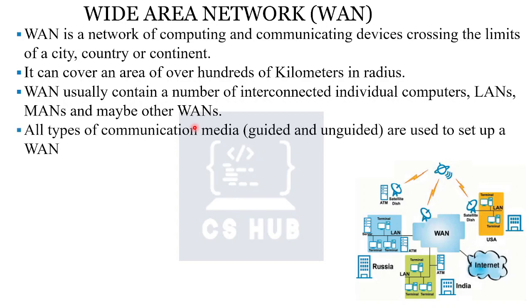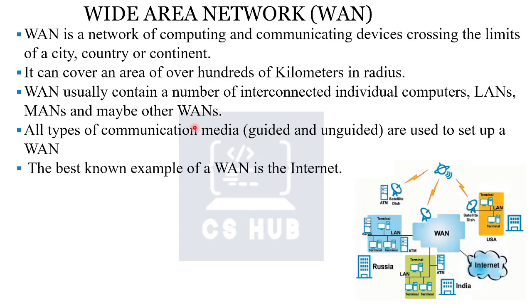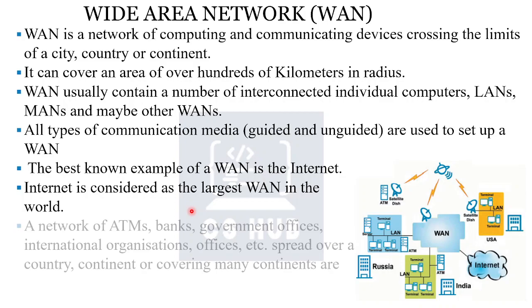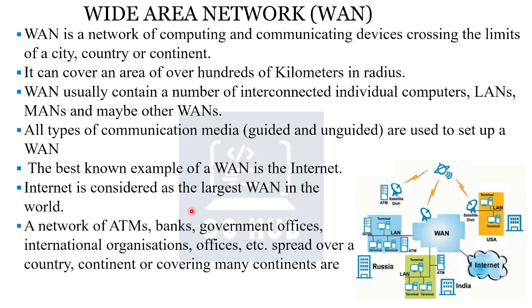The largest WAN connection spans around the globe — all devices are connected using all types of communication media, both guided and wireless. The best example is the internet, which is considered the largest WAN in the world. Other examples include bank ATM networks, government offices, and international organization offices spread over a country, continent, or covering many continents.